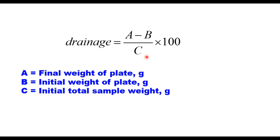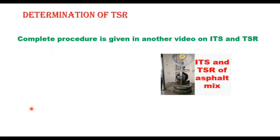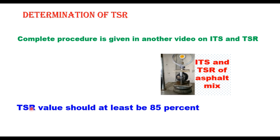Another important test is tensile strength ratio (TSR), conducted per AASHTO T283. TSR is the ratio of average indirect tensile strength (ITS) of conditioned specimens to average ITS of dry specimens, used to determine moisture susceptibility of the mix. Two sets of samples are prepared, each with three specimens — one set is conditioned and the other is tested dry. TSR for SMA should not be less than 85%. This is how we design SMA as per the procedure given in IRC SP79-2023.